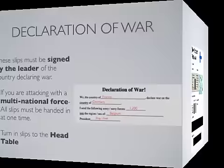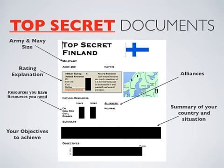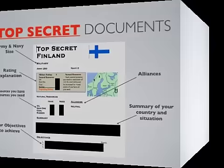The Top Secret document will tell you how big your army and navy are. It will explain how your rating is right now, what alliances you have, the resources you have and the resources you need. It will give you a summary of your country and situation, and will also list the objectives that you are to achieve during the simulation.